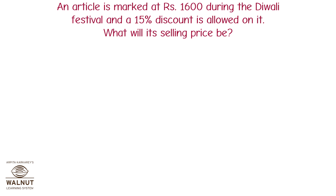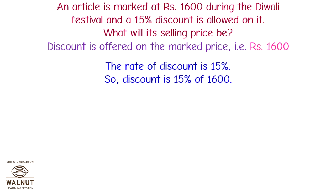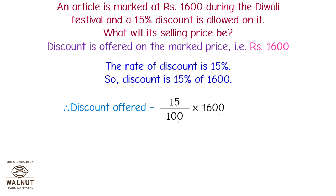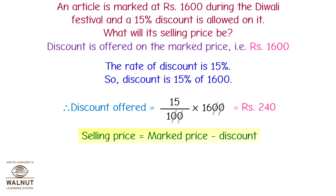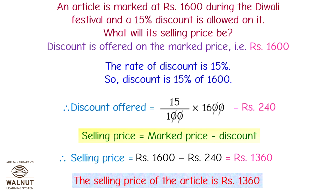An article is marked at Rs. 1,600 during the Diwali festival and a 15% discount is allowed on it. What will its selling price be? The marked price is Rs. 1,600 and the rate of discount is 15%. The discount is 15% of Rs. 1,600, which equals 15/100 × 1,600 = Rs. 240. Therefore, the selling price is Rs. 1,600 − Rs. 240 = Rs. 1,360. The selling price of the article is Rs. 1,360.